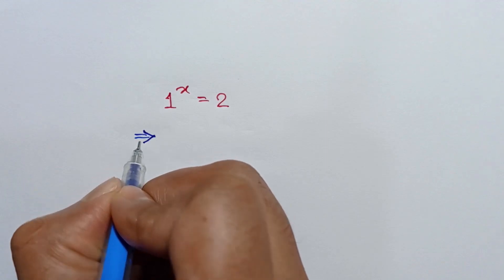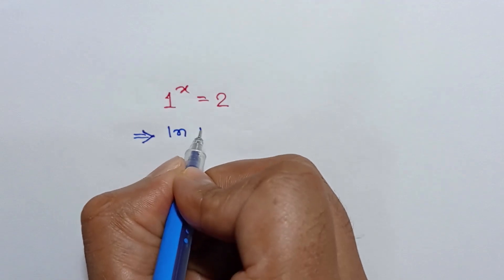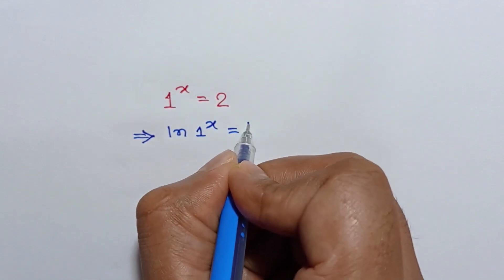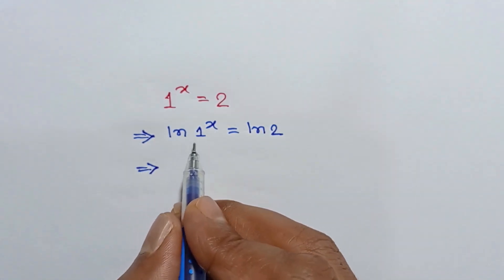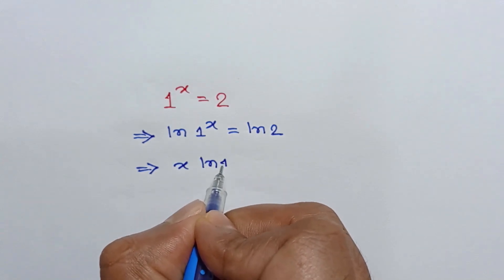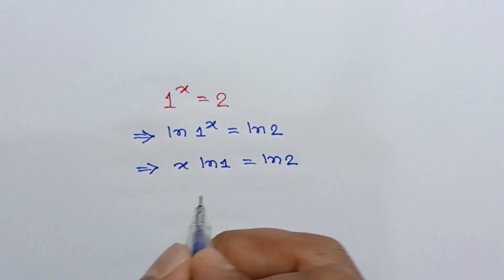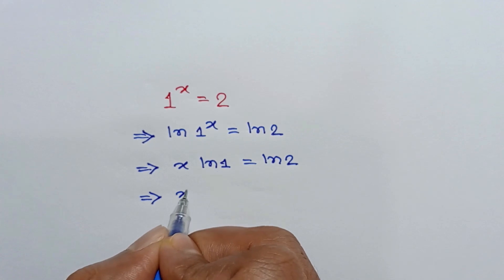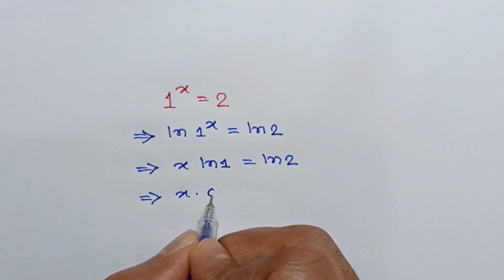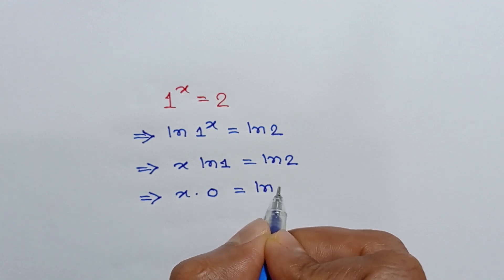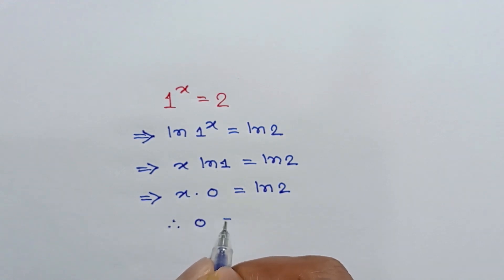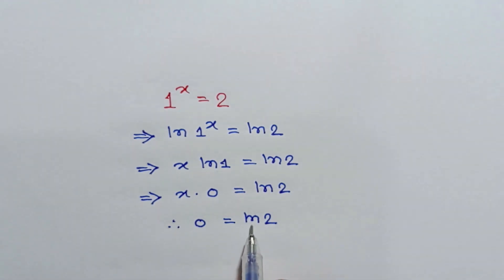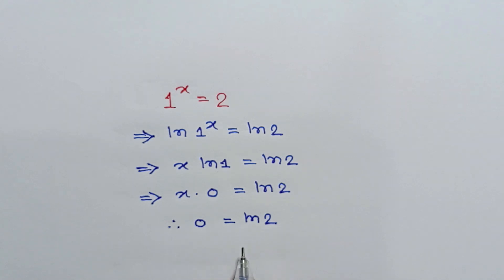Taking ln to both sides we can write ln of 1 to the power x is equal to ln 2. According to the law of logarithm we can write x times ln 1 is equal to ln 2. Since ln 1 equals 0, we get x times 0 equals ln 2, which gives 0 equals ln 2. The value of ln 2 is not equal to 0, so there is no real solution to this equation.